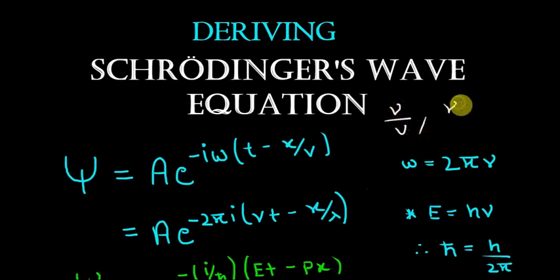We know that nu times lambda equals v, so nu upon v equals 1 upon lambda. So we just put it in here.